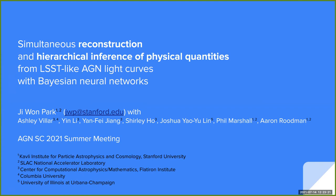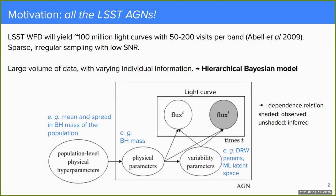My main motivation is to analyze all the LSST AGNs we will observe. From the LSST main survey alone, we're expecting around 100 million AGN light curves with 50 to 200 visits per band. Each light curve will have sparse, irregular sampling with potentially very low signal. But if we apply stringent cuts based on data quality, we risk biasing ourselves. To extract information from the many AGNs — each contributing variable amounts of information — the best approach is to characterize individual uncertainties accurately and combine them into a hierarchical Bayesian model.